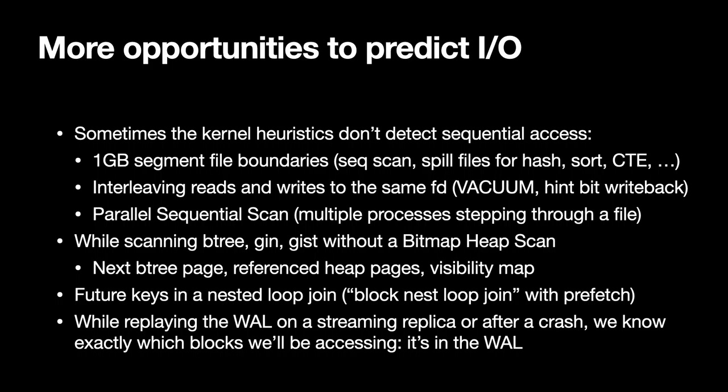There are a whole bunch of other opportunities we could take to predict IO and prefetch. We could do a better job with sequential scans, there are opportunities to prefetch index pages, and for nested loop joins — more ambitiously — you could do prefetching with block nested loop join optimizations considering several keys at once. And finally, while replaying the WAL in crash recovery or on a replica server, you pretty much know what blocks you're going to be accessing. That's the topic I'm going to dig into next.